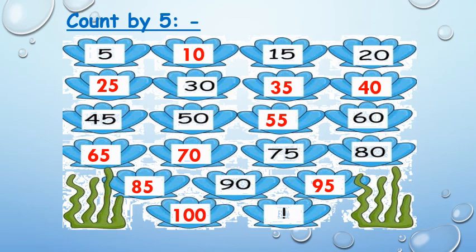When we count by 5, we add 5 every time. You can use your 5 fingers to help. After 5: count on 5 fingers — 6, 7, 8, 9, 10. So 5 and 5 more equals 10. After 10, count on 5 fingers: 11, 12, 13, 14, 15. After 15 and 5 more: 16, 17, 18, 19, 20. Notice: when counting by 5, the numbers will only end in 5 or 0. Thank you.